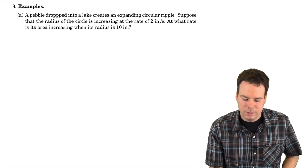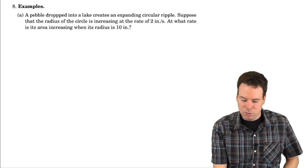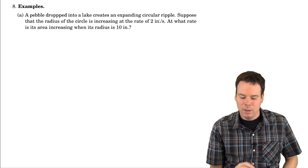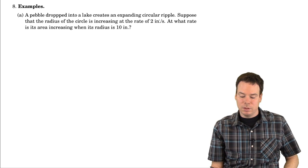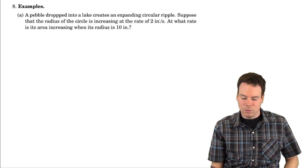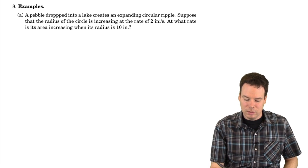Let's have a look at this example. We've got a pebble that's dropped into a lake and it creates an expanding circular ripple. Suppose that the radius of the circle is increasing at the rate of 2 inches per second. At what rate is its area increasing when its radius is 10 inches?